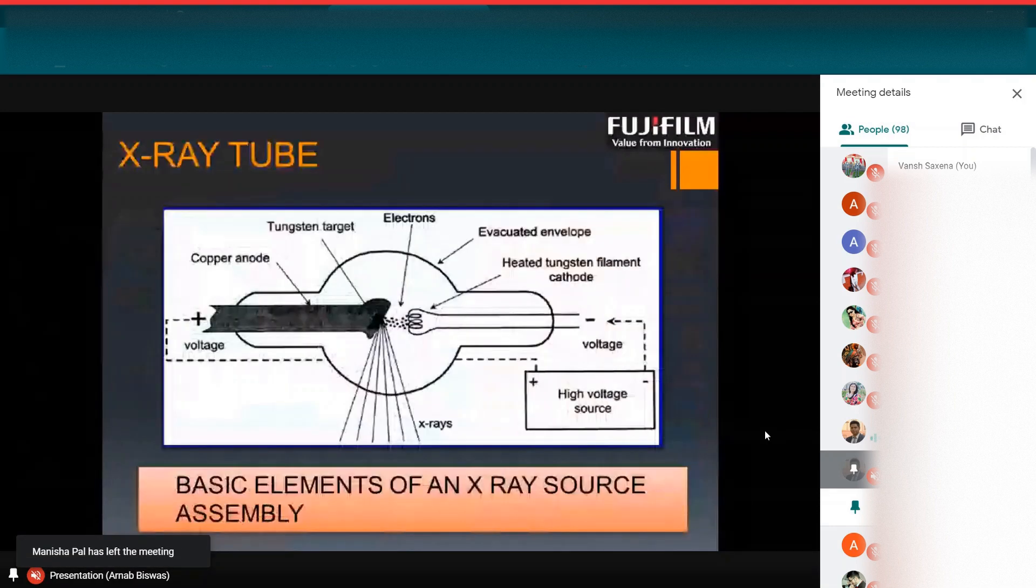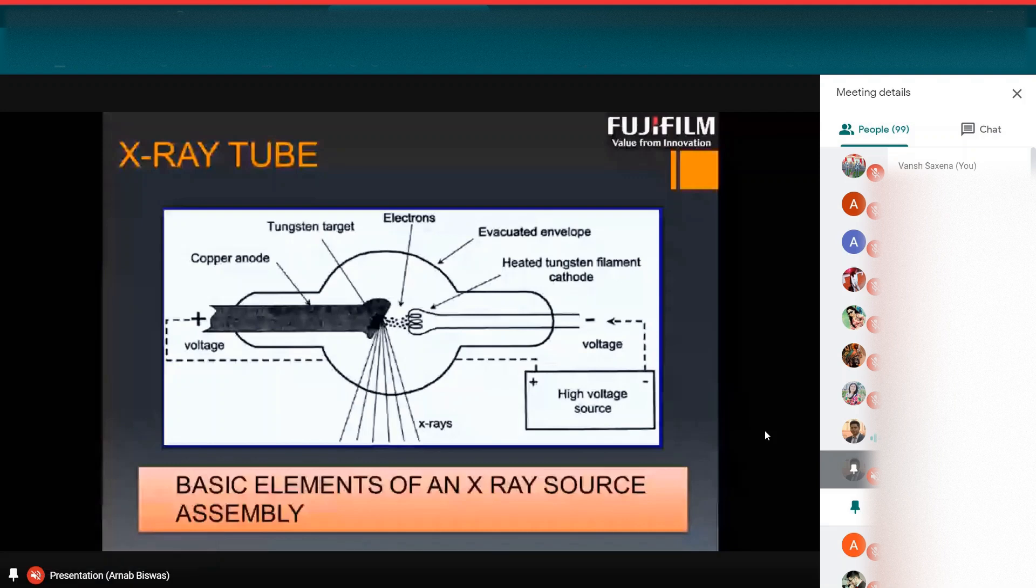Before starting the X-ray fundamentals, I will discuss about X-ray tube. What are the components in the X-ray tubes? We all know the X-ray tubes has one evacuated glass, one cathode material, anode material and high voltage electric source.